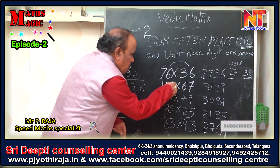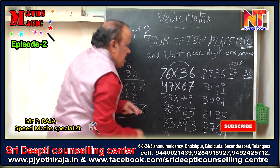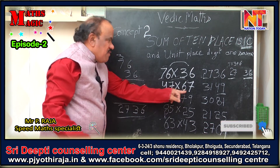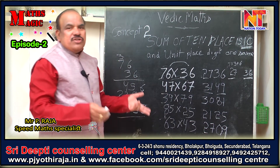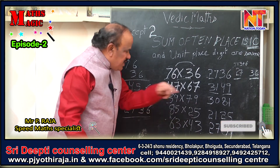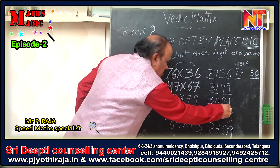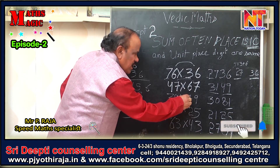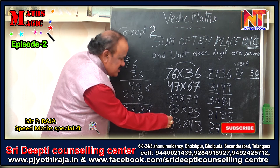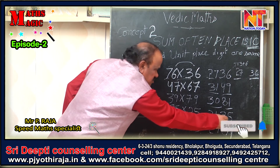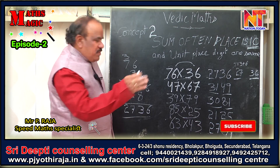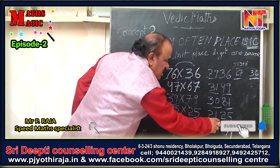Same way: 77 times 67 — 7 times 7 is 49; then 6 plus 4 is... 7 times 6 is 42, 42 plus 7 is 49... giving 4931 — wait, 3149. Same way: 39 times 79 — 9 times 9 is 81; 7 plus 3 is 21, plus 9 is 30; answer is 3081. Next: 55 times 85 — 5 times 5 is 25; 8 plus 2 is 16, plus 5 is 21; answer is 2125.